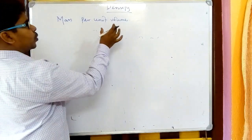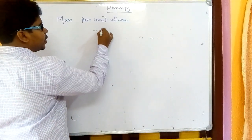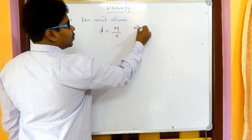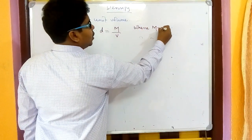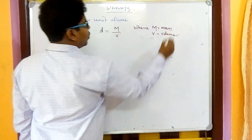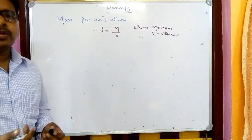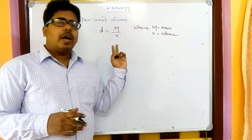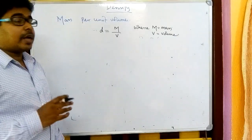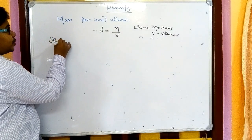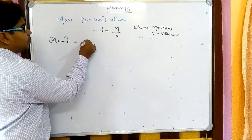Density is mass per unit volume. We represent density as d = m/v, where m is mass and v is volume. When answering a question about density, write the definition and the equation — then your answer is complete. The SI unit is kg per meter cube, and the CGS unit is gram per centimeter cube.